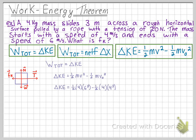We know that the mass is equal to 4 kilograms, the initial velocity was 4 meters per second, and the final velocity was 6 meters per second. Once we plug in these values, we see that the change in kinetic energy is 40 joules.